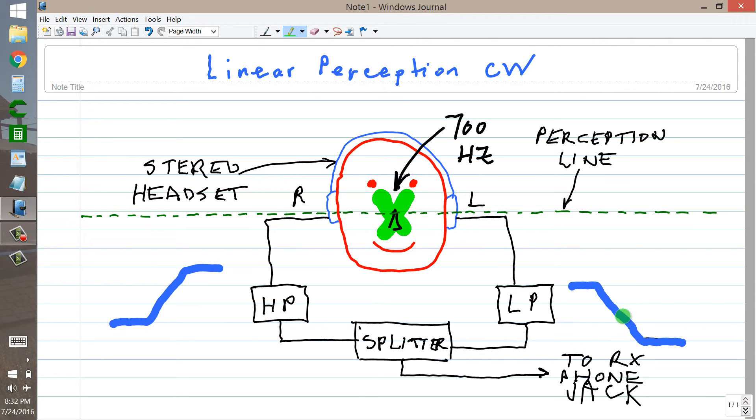The lower the pitch of the tone, the greater the gain in the left-hand channel, and the lower the gain in the right-hand channel, and the further over this way. So 300 Hz might be here, 200 Hz here, 100 Hz here.